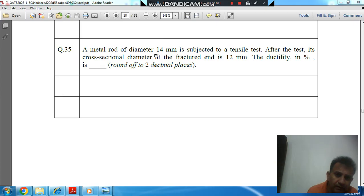Question number 35: A metal rod of diameter 14 mm is subjected to a tensile test. After the test, its cross-sectional diameter at the fractured end is 12 mm. The ductility in percentage is rounded off to two decimal places.